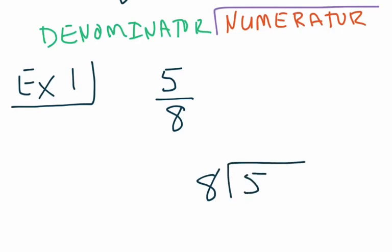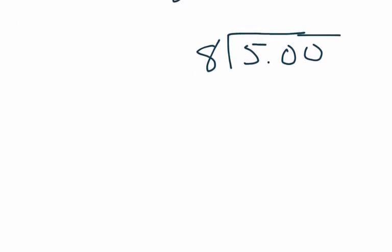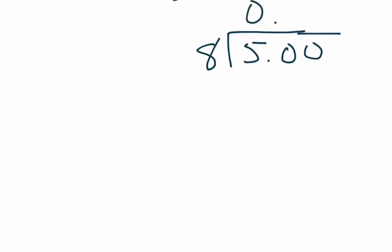Now we're going to need a decimal place after the 5, then we're going to include some 0's, just because we know that this is going to be a decimal, so we're going to make space for that now. So first thing we ask ourselves, how many times does 8 go into 5? And we know that the answer to that is 0, so we can go ahead and put a 0 above the 5 with a decimal underneath. Make sure that our decimals always stay aligned correctly.